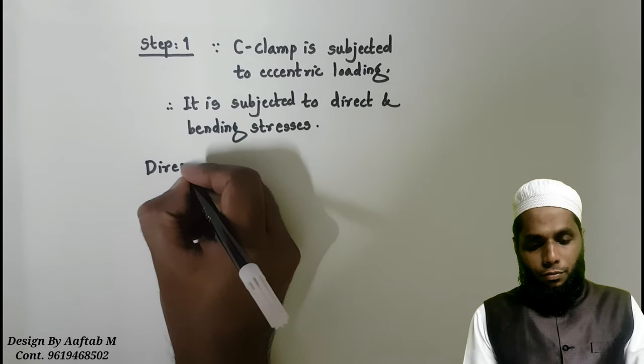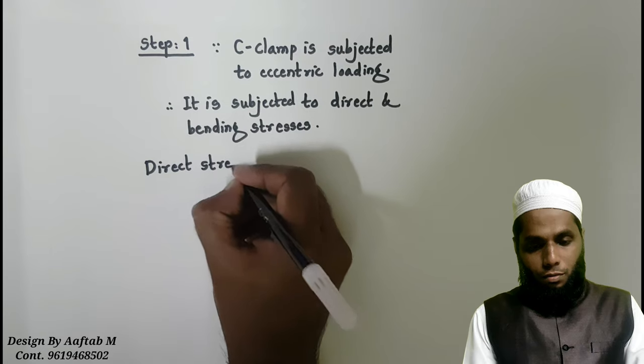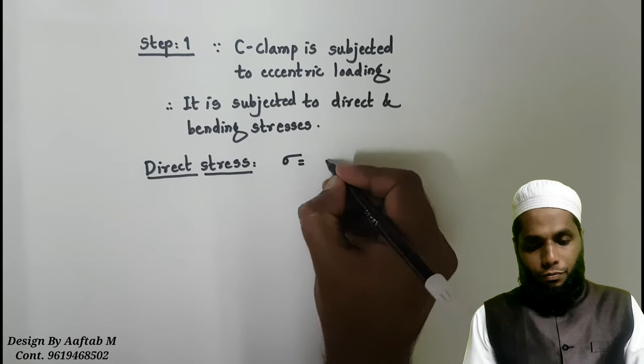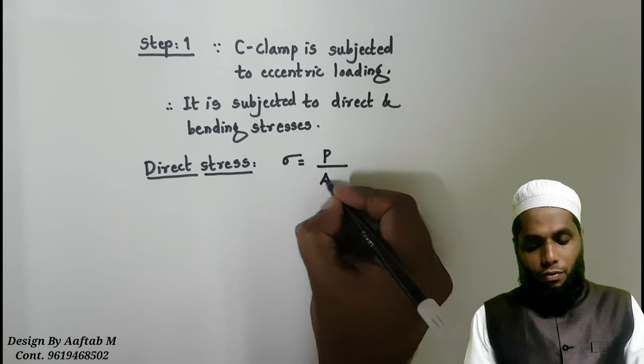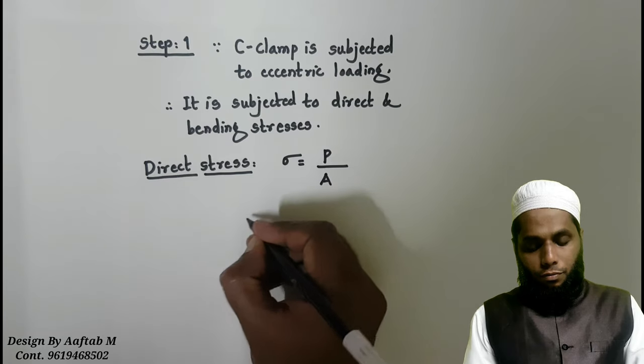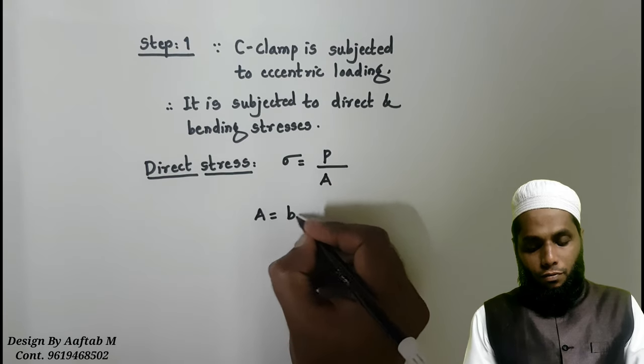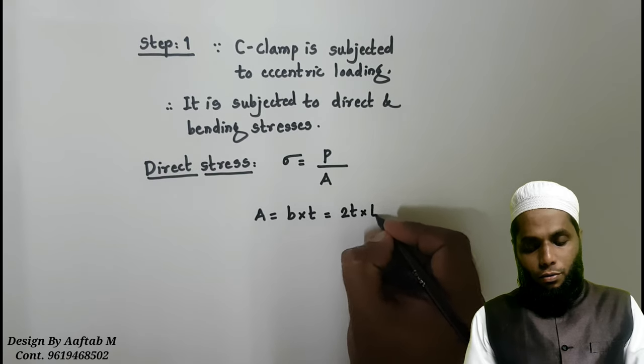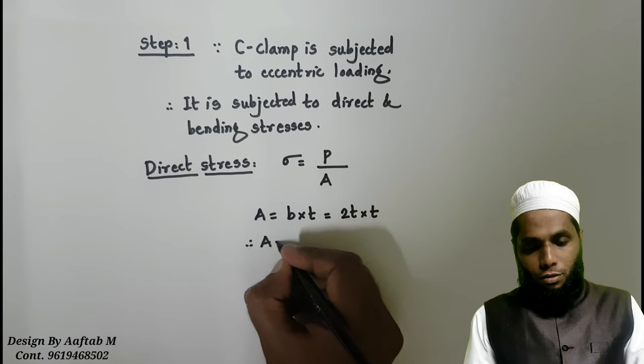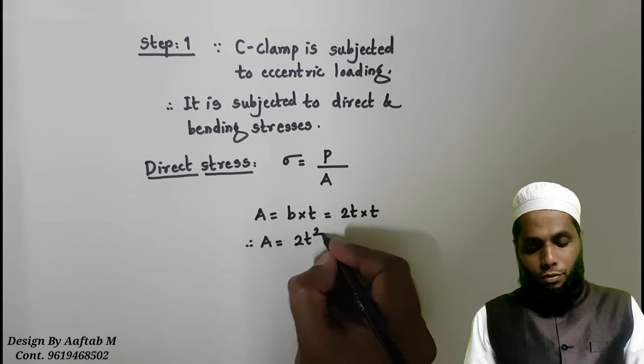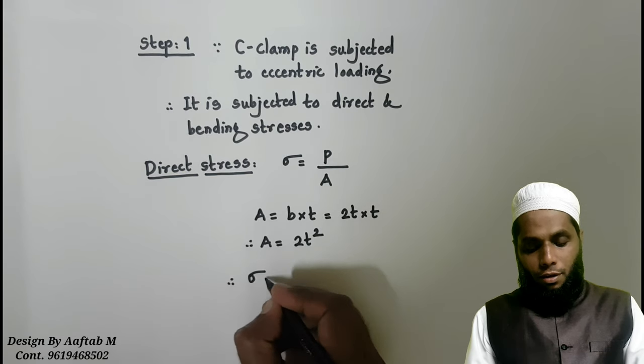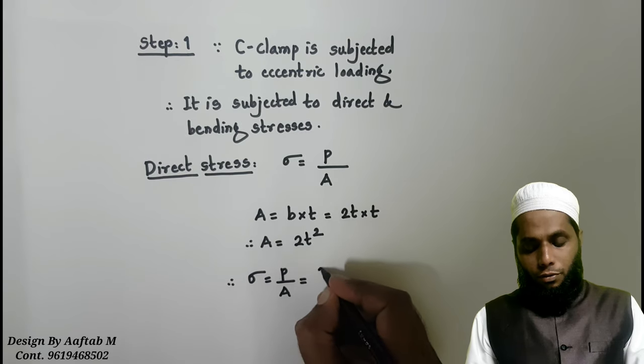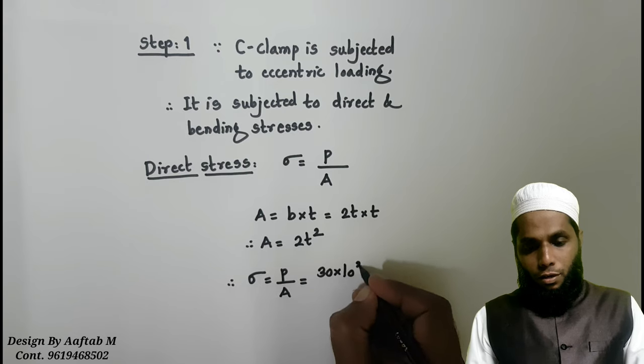It is denoted as sigma equals P divided by A, where we have P value that is force and area for rectangular cross section B into T. B is 2 times of T. Therefore, 2T into T. Therefore, area is 2T square. So, we will substitute value of force and area.